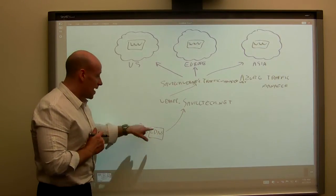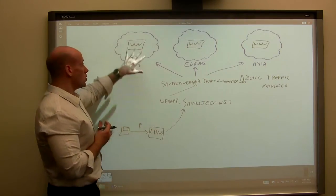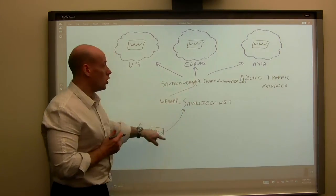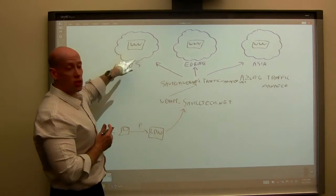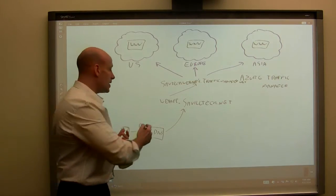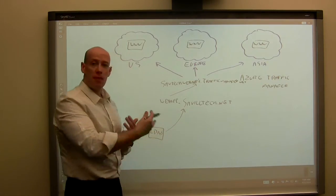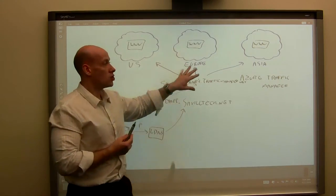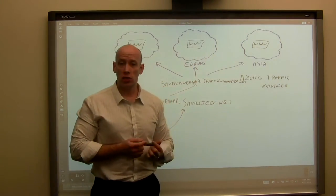And it builds this up over time. So what it's going to do is it's going to work out, hey, based on the local DNS server that made this request, I see that DNS server from a latency perspective is closer to the US Azure region. So this is going to return the record that points to the US service. So that's what traffic manager is doing. It's basically looking at the local DNS server that's making the request and redirects me to whichever service is the closest to me.